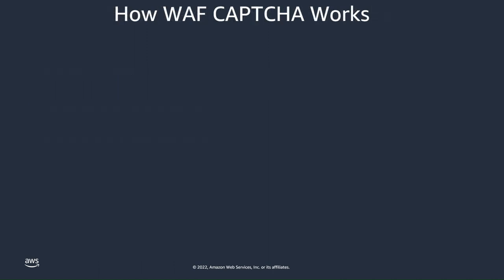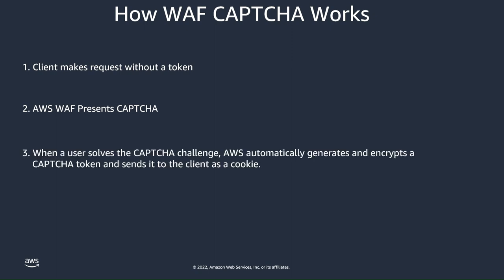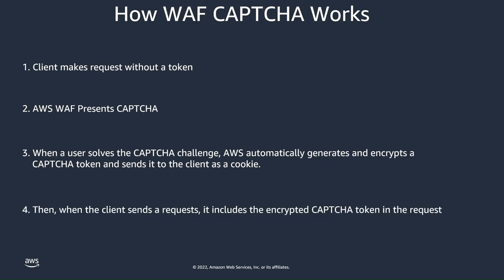Now let's discuss how AWS WAF CAPTCHA works. AWS WAF CAPTCHA uses tokens to track successful responses to CAPTCHA. When a client makes a request without a token, AWS WAF presents a CAPTCHA. When a user solves the CAPTCHA, AWS automatically generates and encrypts the CAPTCHA token and sends it to the client as a cookie. When the client sends a subsequent request, it includes the encrypted CAPTCHA token, and AWS WAF automatically decrypts the token and verifies that it is a valid CAPTCHA token. The token itself includes the timestamp of the last successful response to the CAPTCHA.